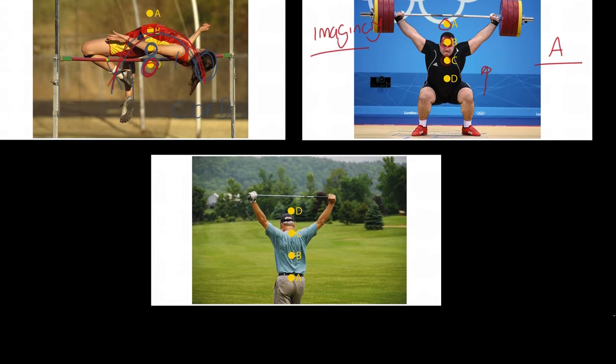One last example: this performer is upright rather than squatting, and they're holding a golf club in a similar position to the weighted bar. But notice the golf club is significantly less heavy than the weighted bar. So where is the center of mass? I'd argue it's point B, because the weight of the club is so much less that the mass is still distributed relatively close to the navel.